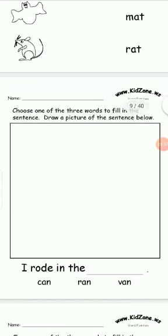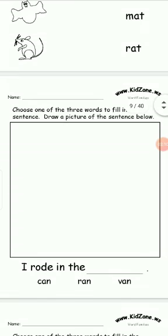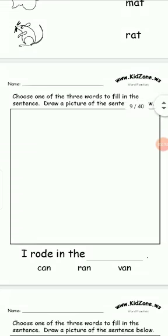Choose one of the three words to fill in the sentence. Draw a picture of the sentence below. I rode in a — can? No. Ran? No. Van? Yes. Write van in the blank and draw a van.